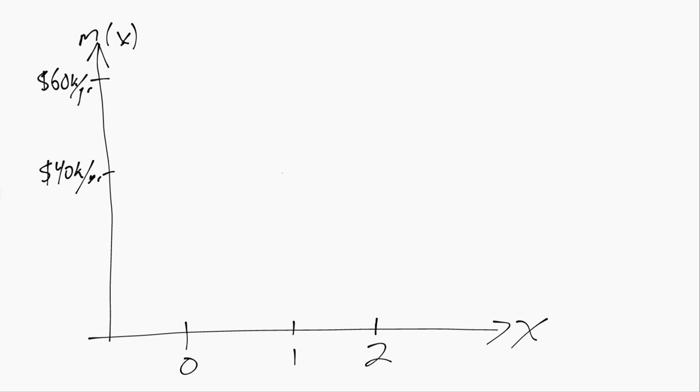For simplicity, we're just assuming there's three possible values of x in the population: zero siblings, one sibling, or two siblings.